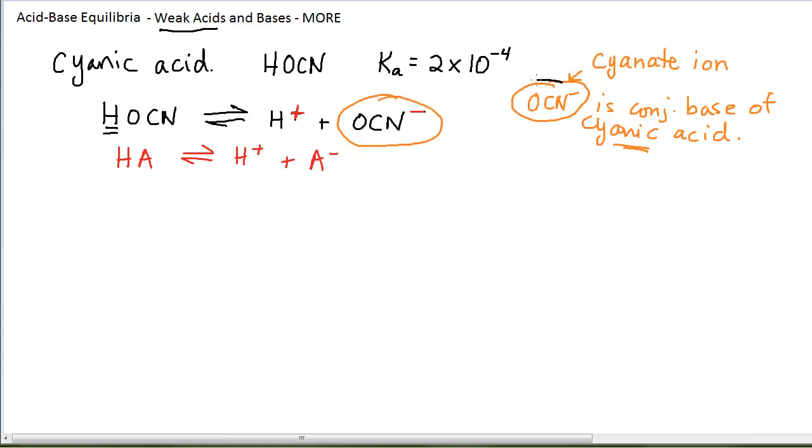If I have, if I come across a problem in the homework, textbook, quiz, test, whatever, that involves the cyanate ion, then I am expected to be familiar enough with it to know that that's a base. The cyanate ion is a base because it is the conjugate base of the cyanic acid. Now the cyanic acid is a weak acid. Its conjugate base is a weak base. The conjugate base of a weak acid is a weak base.